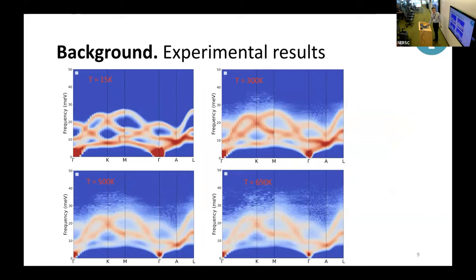From this we obtain dispersion curves which are basically the phonon spectrum as a function of momentum transfer along some high symmetry directions at different temperatures. What I want to emphasize is that there are usual dispersions shown at 15K and 300K, but we have additional diffuse scattering at high temperatures at 500K and 690K which we attribute to phonon-phonon interactions.